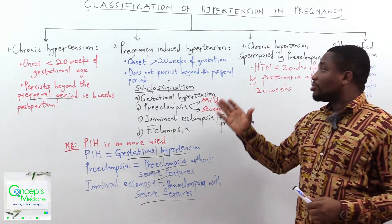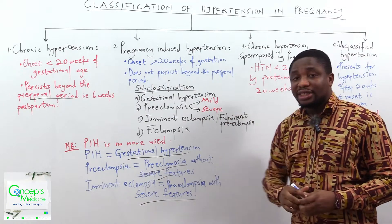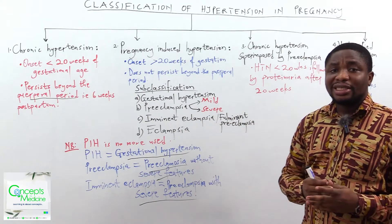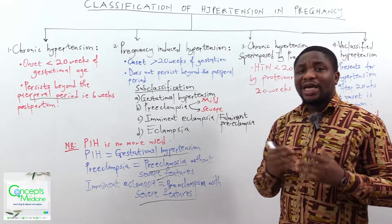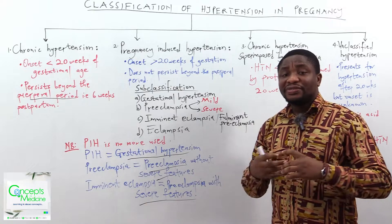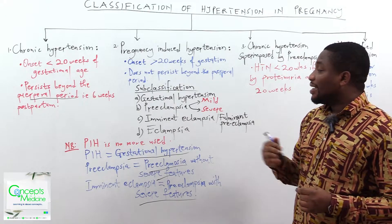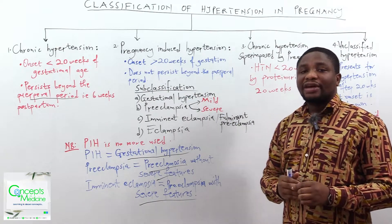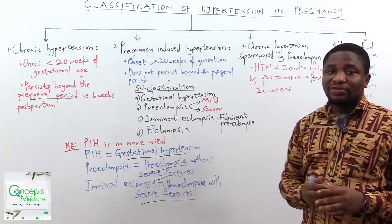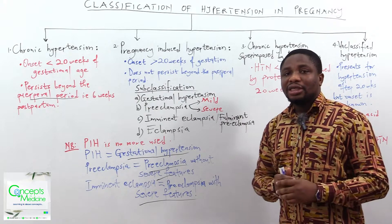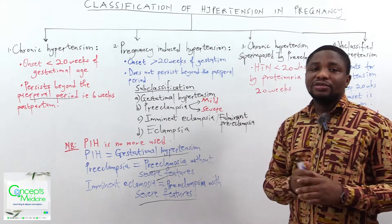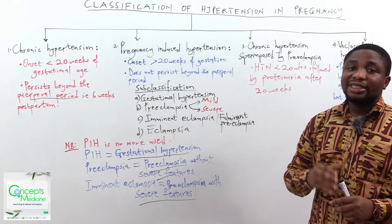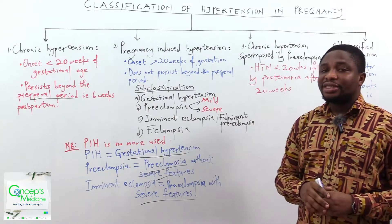With gestational hypertension, we are still referring to the definition of hypertension. The onset will be after 20 weeks of gestation, and it will resolve within the puerperal period. That is gestational hypertension.